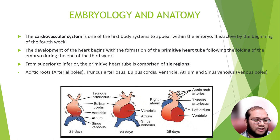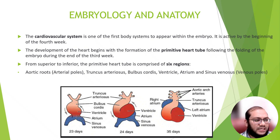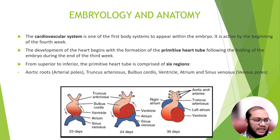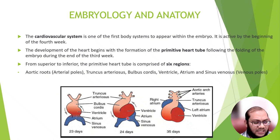The cardiovascular system is one of the first body systems to appear within the embryo, active by the beginning of the fourth week. The development of the heart begins with the formation of a primitive tube, followed by folding of the embryo during the end of the third week. From superior to inferior, we have truncus arteriosus, bulbus cordis, ventricle, atrium, and sinus venosus. Later on, the ventricle becomes inferior and the atria become superior due to folding.